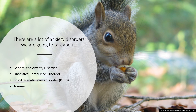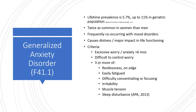We're going to talk about generalized anxiety disorder, obsessive compulsive disorder, post-traumatic stress disorder, and trauma. GAD has a lifetime prevalence of 5.7%, up to 11% in the geriatric population, is twice as common in women than men, frequently co-occurs with mood disorders, and causes major impact on life functioning. DSM-5 criteria include excessive worry and anxiety greater than six months, difficulty controlling worry, and three or more of the following: restless or on edge, easily fatigued, difficulty concentrating, irritability, muscle tension, or sleep disturbance.